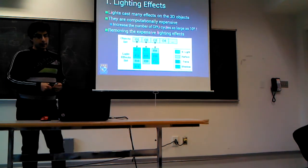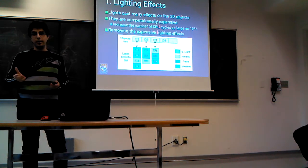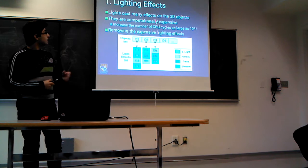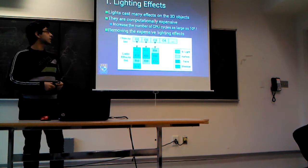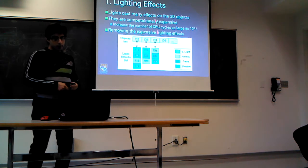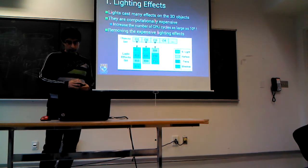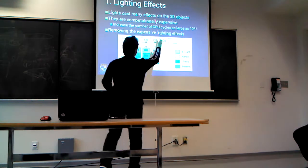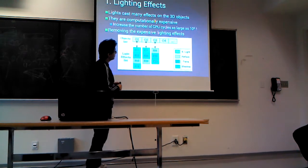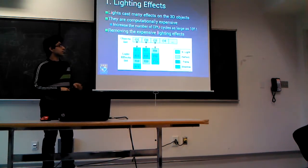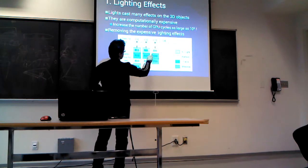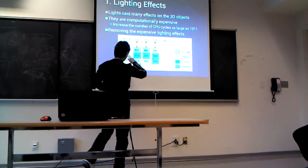The first part is lighting effects. Lighting is a widely used technique in 3D applications and has many effects on 3D objects. These effects are expensive in terms of computation — studies show increased instruction cycle counts as large as 100 million cycles. Our approach computes lighting for all objects in the 3D world, and we detect four types of lighting effects: specular light, reflection, transparency, and shadow. We then selectively remove these lighting effects from certain objects.